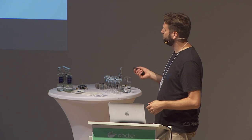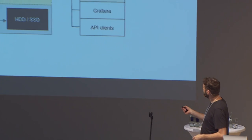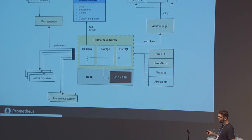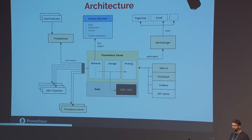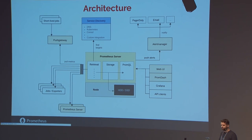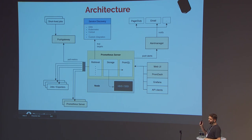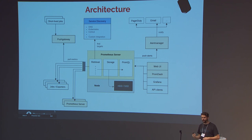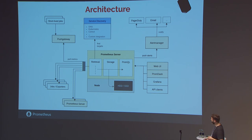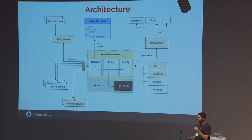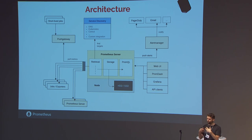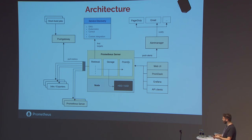The centerpiece of Prometheus is the Prometheus server, of which you would usually run one or multiple in your organization — for example, one per team. This server is configured to actively pull metrics from the things you care about. For services where you own the code, you can add direct Prometheus metrics and expose them on an HTTP endpoint in a specific format where Prometheus can pull it.